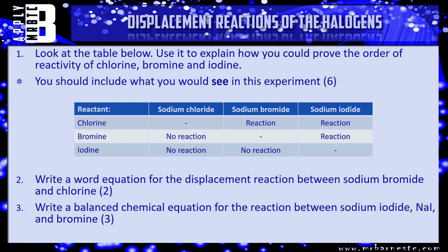Let's look at a couple of questions. First, a 6-marker: use the table to explain how you could prove the order of reactivity of chlorine, bromine and iodine based on what you've seen in this video. We're using sodium chloride, sodium bromide and sodium iodide — it's exactly the same, just imagine those are the potassium salts. Chlorine reacts with sodium bromide and sodium iodide; bromine reacts with sodium iodide but not sodium chloride; iodine doesn't react with any of them. Also write a word equation for the displacement reaction between sodium bromide and chlorine.